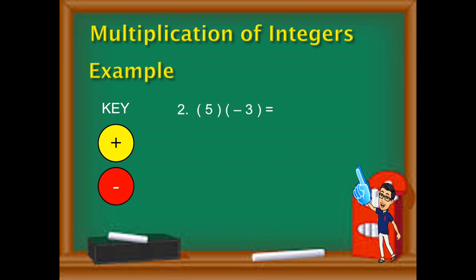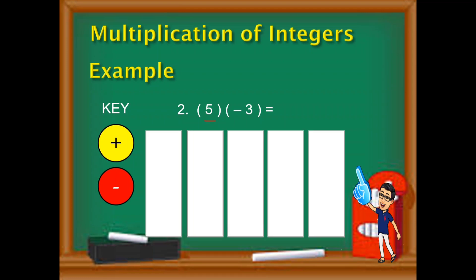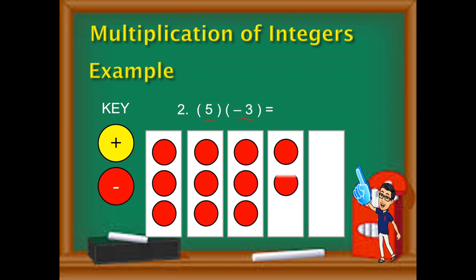Let's proceed with the second example. 5 times negative 3. So if this is the case, ilan ang group. So obviously, ang titignan natin ay first integer. So we need to have 5 groups. 5 groups of what? Tatlong or negative 3, tatlong red chips. So 5 groups of red chips. So lagyan ngayon natin yan ng red chips. So limang grupo na siya ngayon ng red chips.